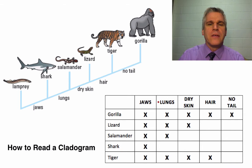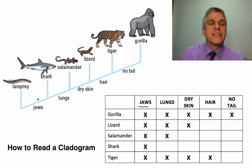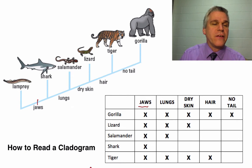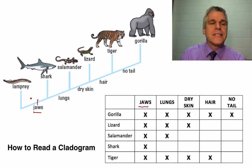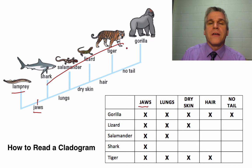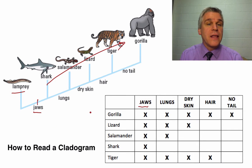Let's start with the jaws column. All five of these have jaws. The one that does not — and it's not even listed on here — is the lamprey. So I'm going to put a little line there. That represents the derived character that separates the lamprey from the rest of the animals that are on this cladogram.